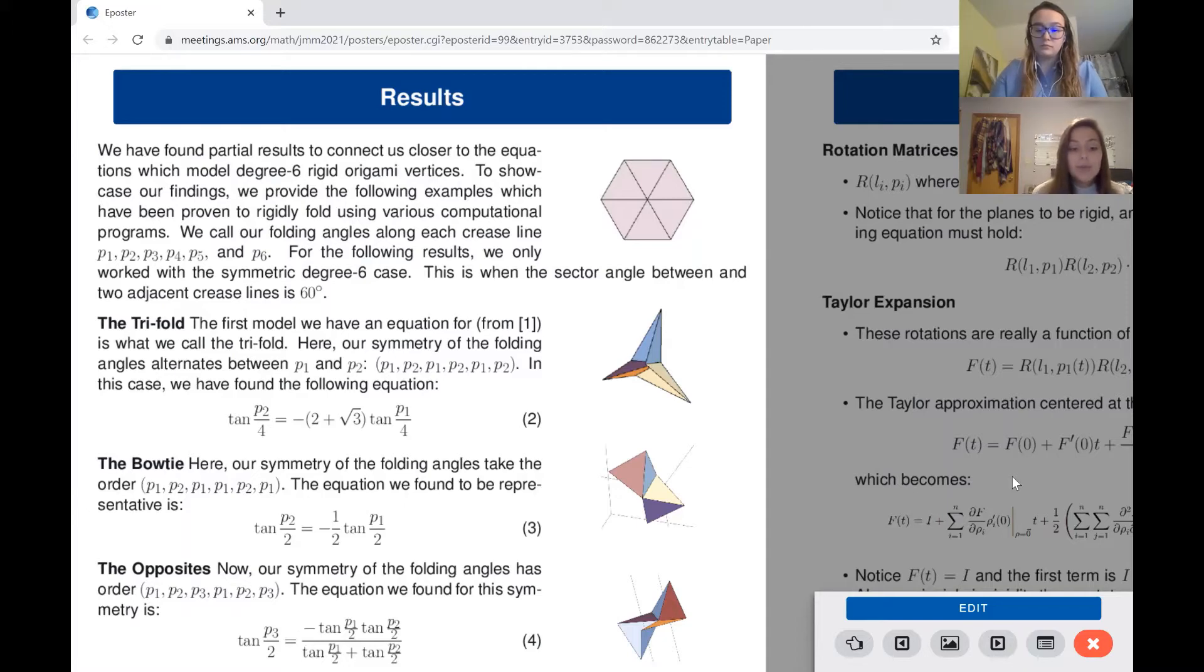To ensure we found all possible folding patterns we used combinatorics and computational mathematics. From this we found that the three we had as well as the p1, p2, p3, p4, p3, p2 pattern were the only possible rigid folding patterns.